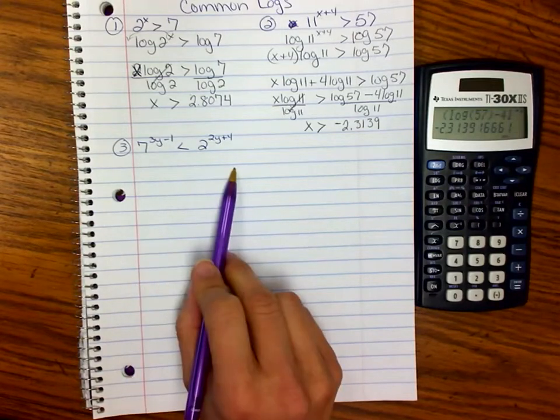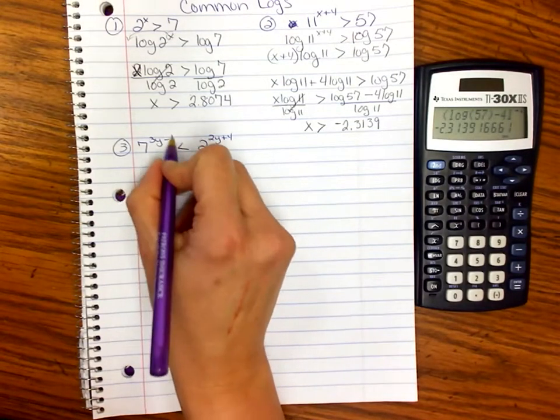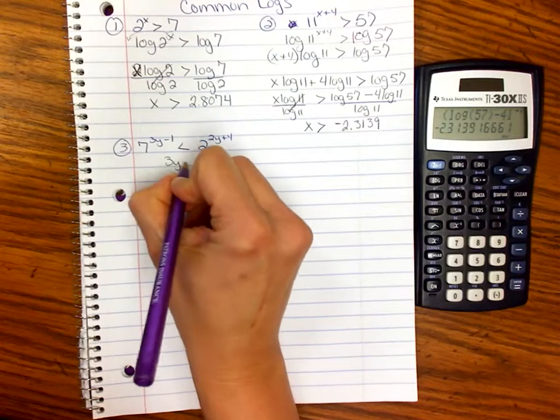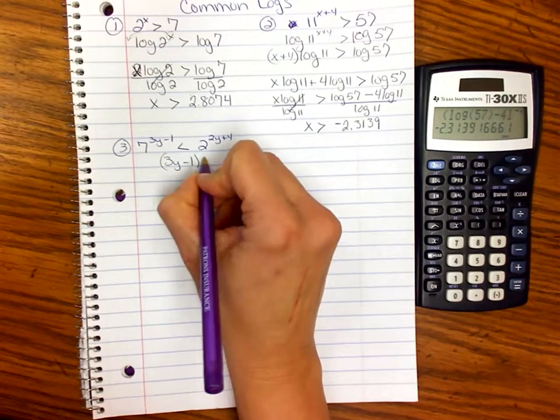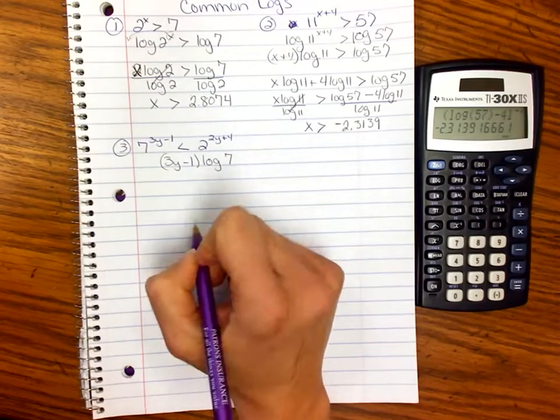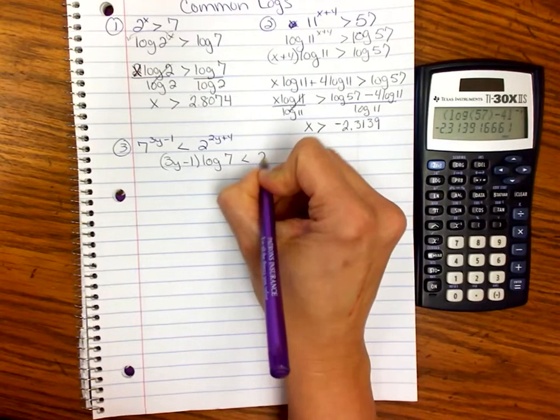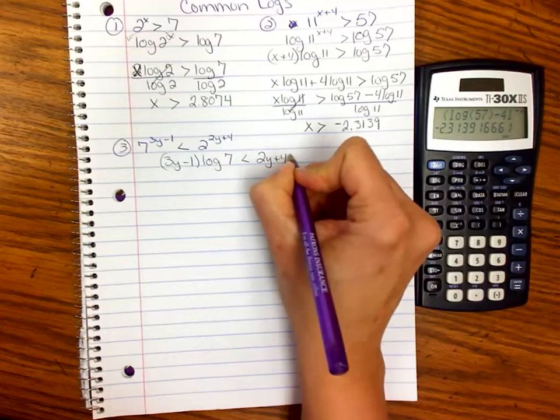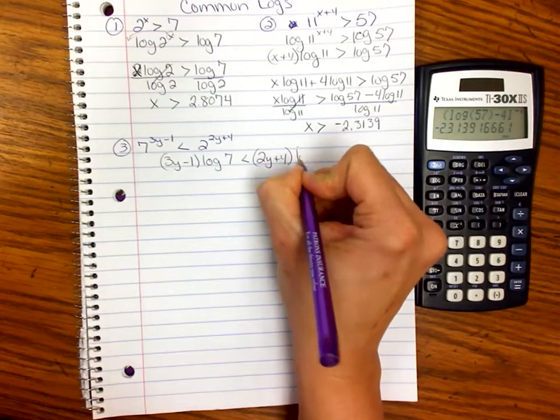Now let's do this. We're going to take the log of both sides again. We're going to bring that in front. We're going to say 3y minus 1, because that's one of our log properties. If you take the log and it has some power up here, you can bring it down in front. So (3y-1)log(7) is less than (2y+4)log(2).